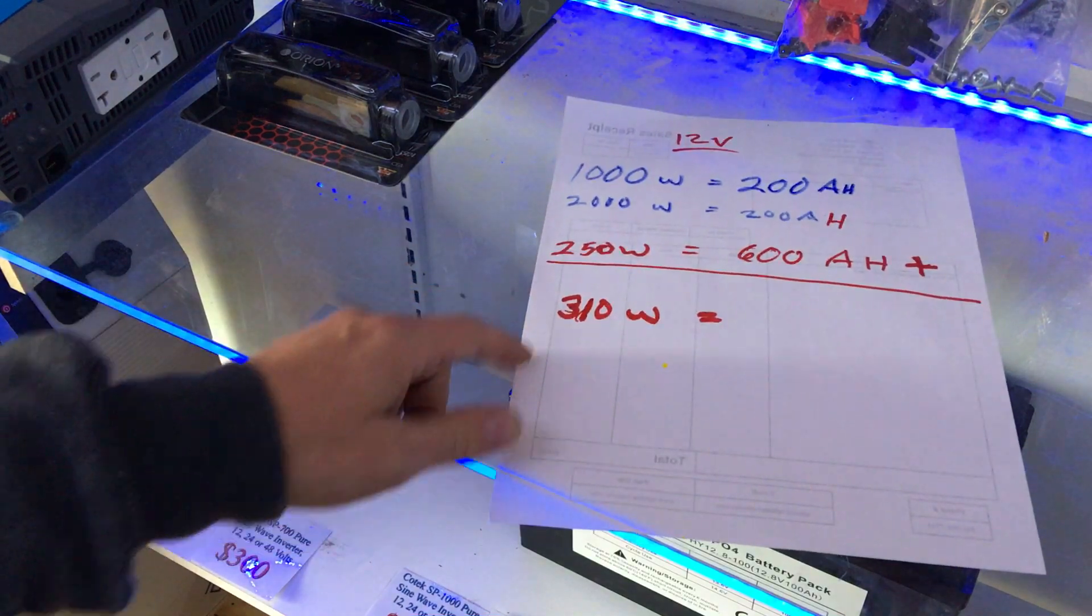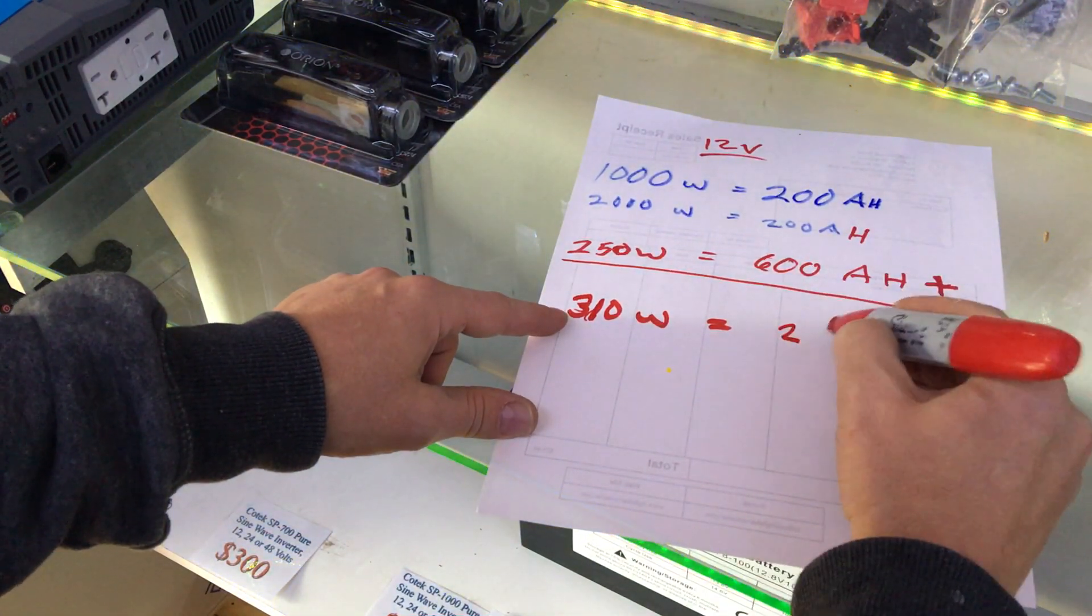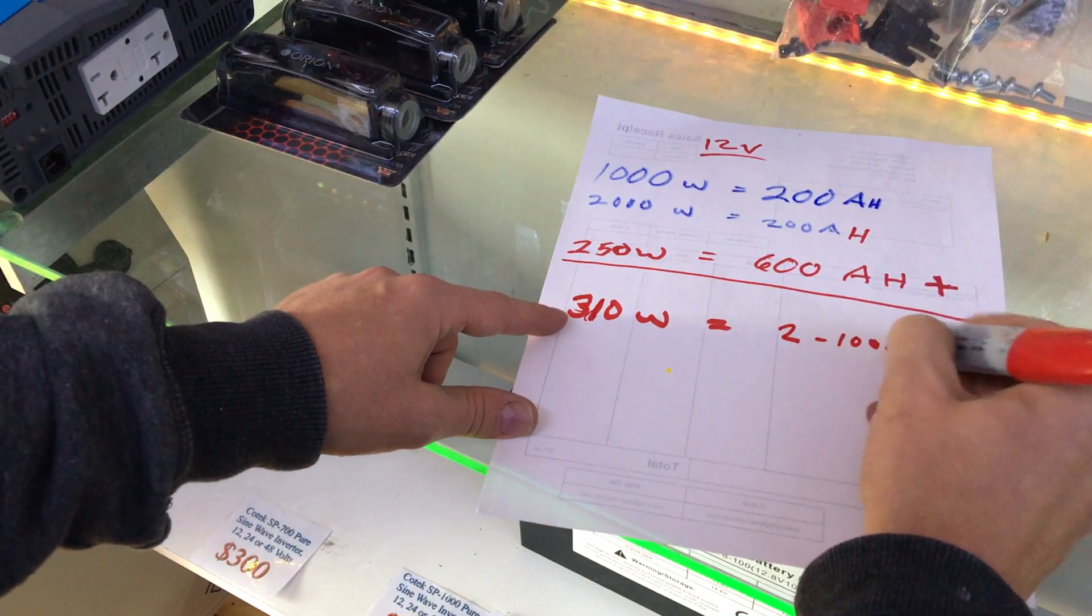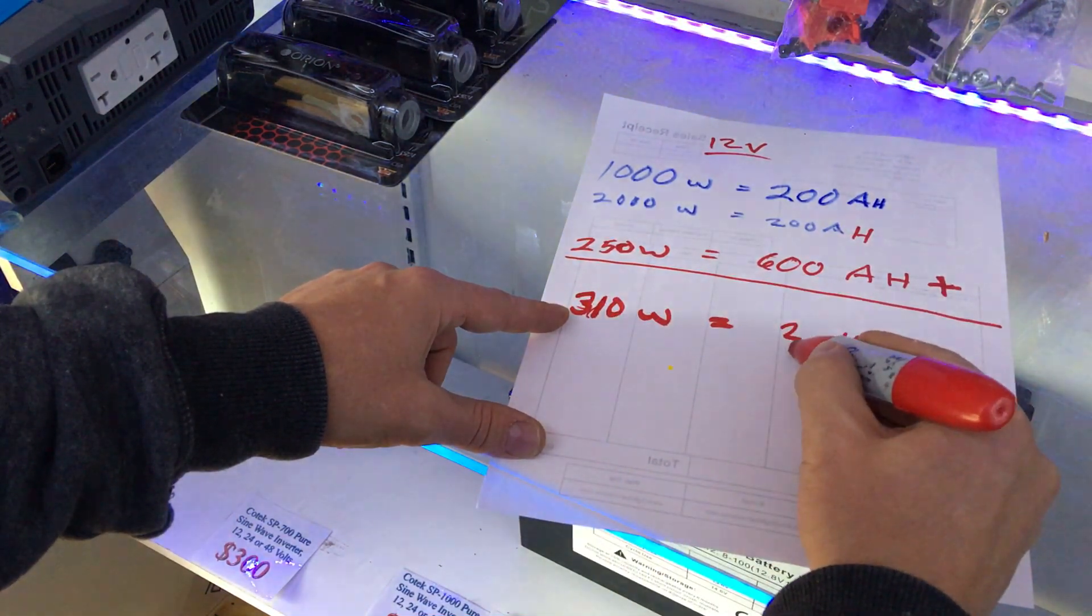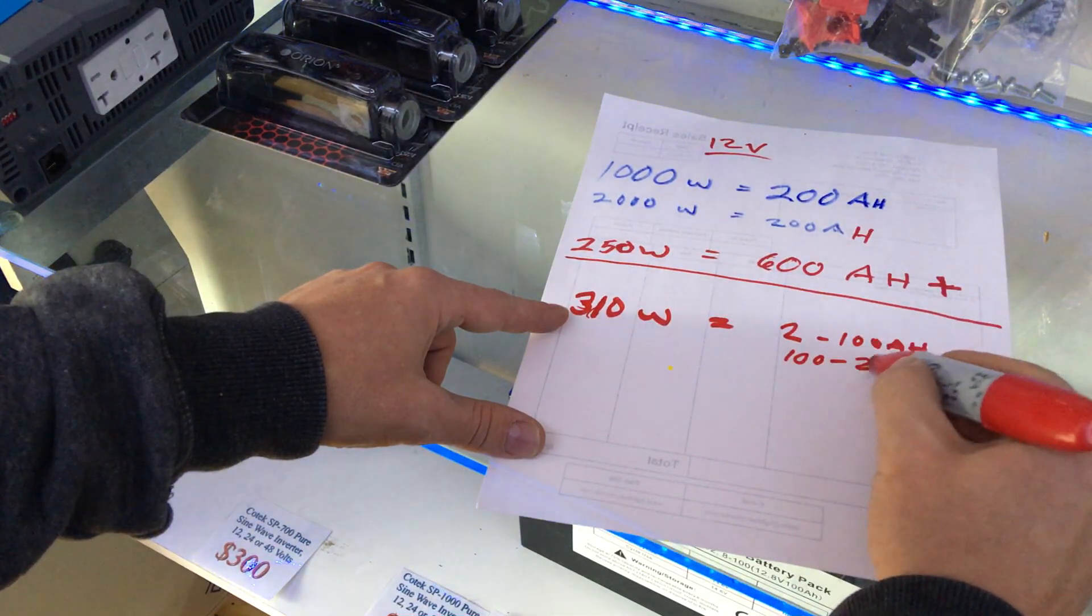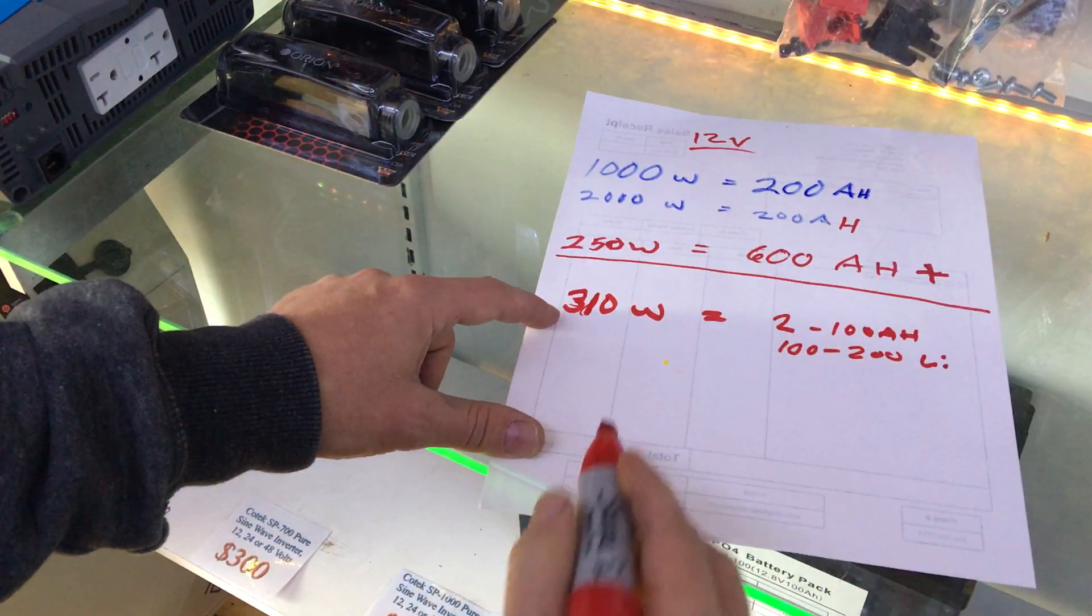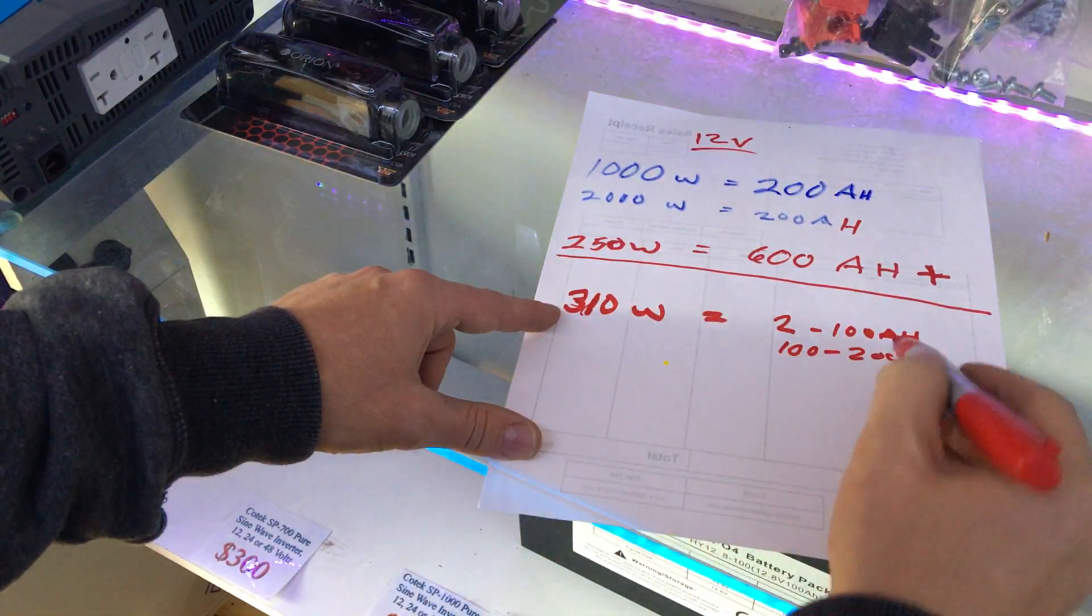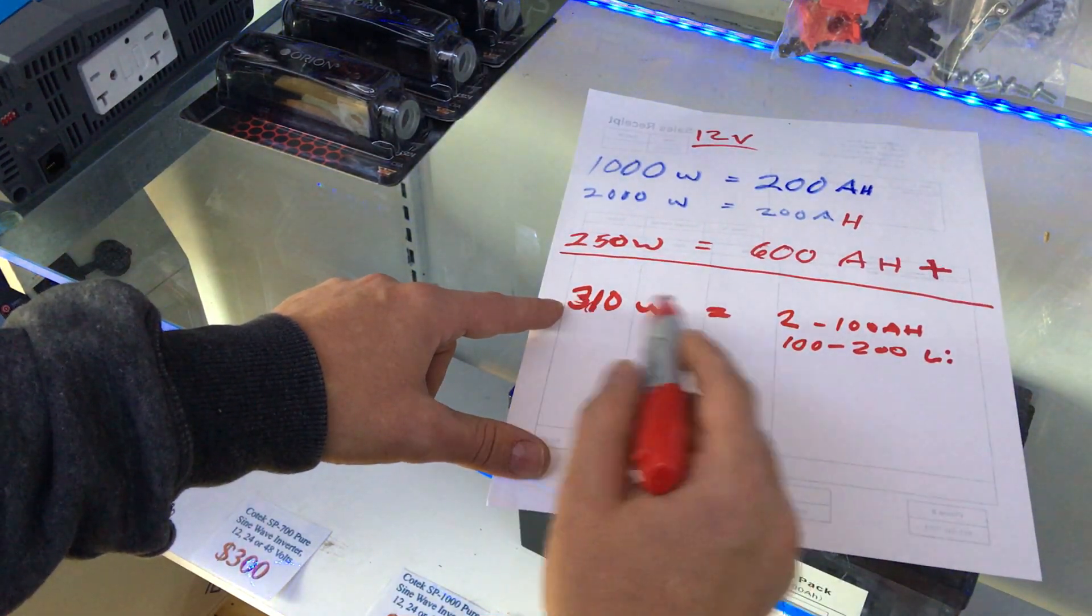This is not particularly a big system, but I would say 200 amp-hour batteries. Let's just say a range for that would be maybe 100 to 200 amp-hours of lithium. That's a pretty good ratio. You can go all the way up and down the board in panels.